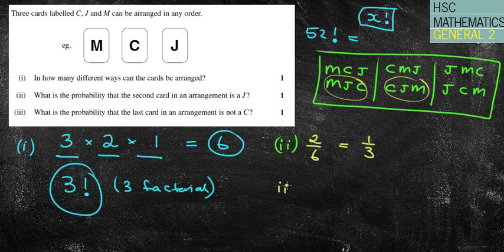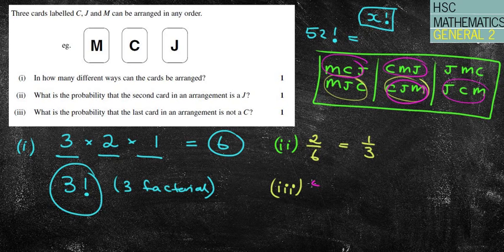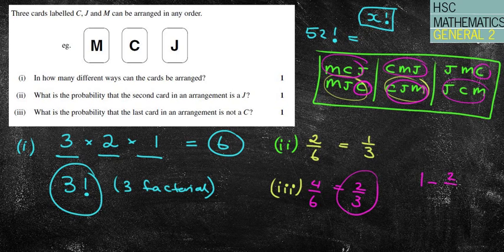The next one, number three, it says, What is the probability that the last card is not a C? Well, you could do it one of two ways. You could say, that's not a C there. There's a J, there's a J, there's an M, there's an M. Therefore, we have four in six options or two in three. The other way you might look at it, you have two options where you do have a C. So one take away two out of six, that still would give you the four out of six, which is two thirds. So a complementary event, it could be done that way as well. So there are lots of different ways that you could do that question.